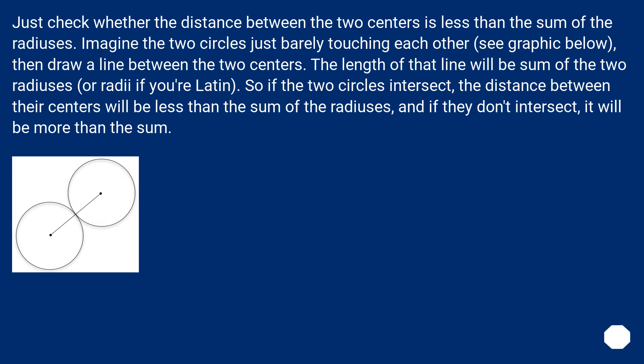So if the two circles intersect, the distance between their centers will be less than the sum of the radiuses, and if they don't intersect, it will be more than the sum.